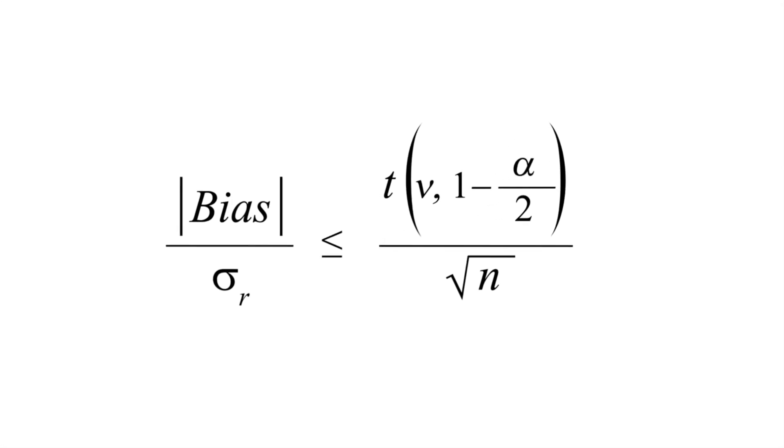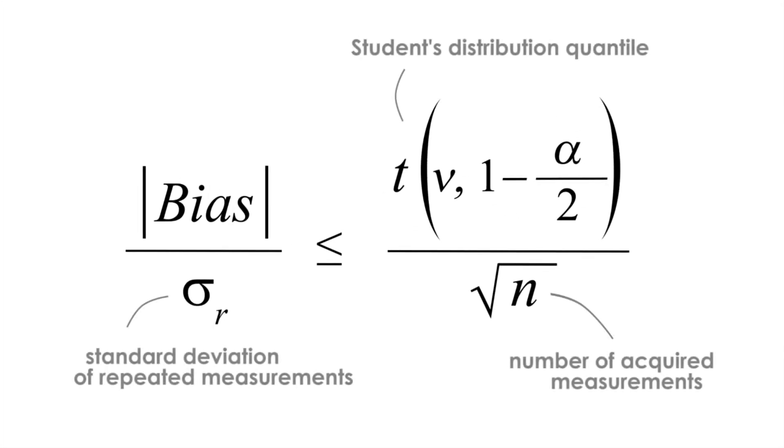The left side of the formula compares the bias to the repeatability through dividing the average bias by the standard deviation of the repeated measurements. This fraction must be equal or less than the criteria given on the right side.